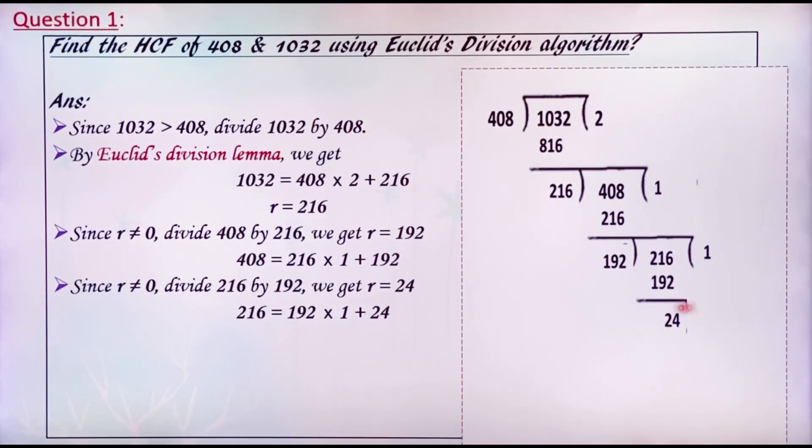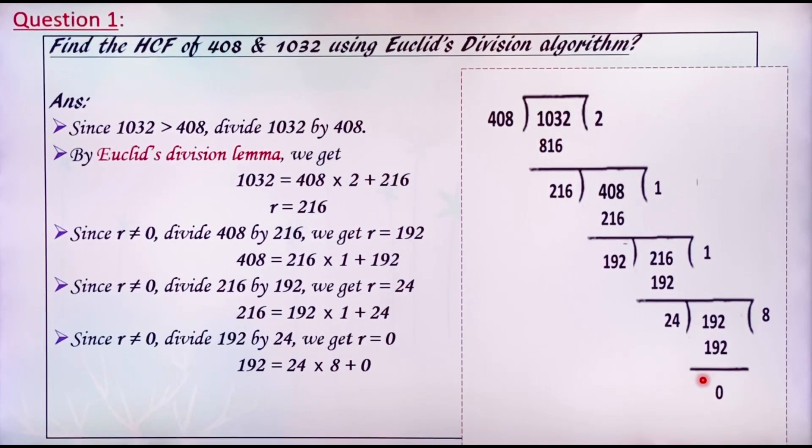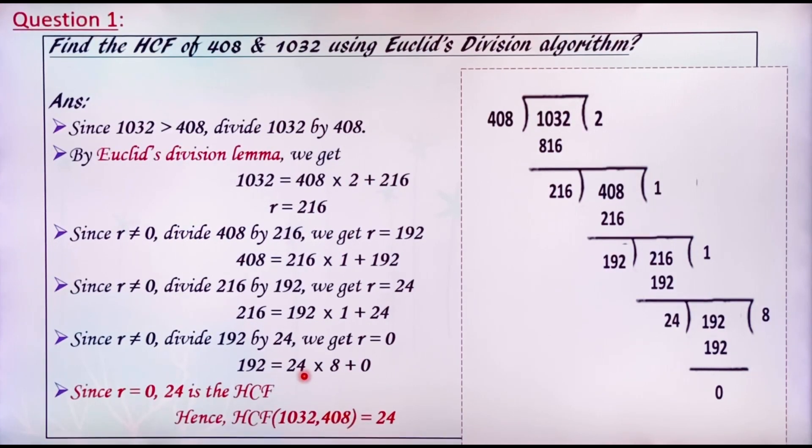Since r is not equal to 0, again divide 192 by 24. Here we get the remainder 0. That is 192 equals 24 into 8 plus 0. Now, the divisor 24 will be the HCF. Hence, the HCF of 1032 and 408 equals 24.